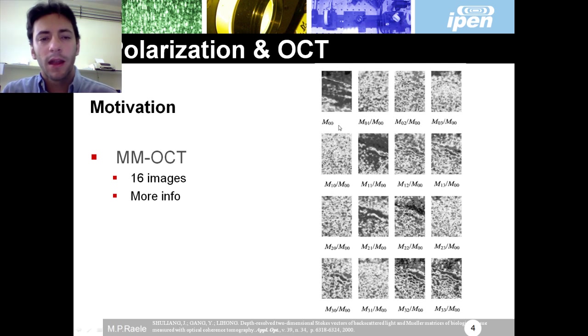I can get my image of the Mueller matrix, and this is very nice because I don't have only the scattering behavior, but I have how the sample is changing my polarization state of the light.